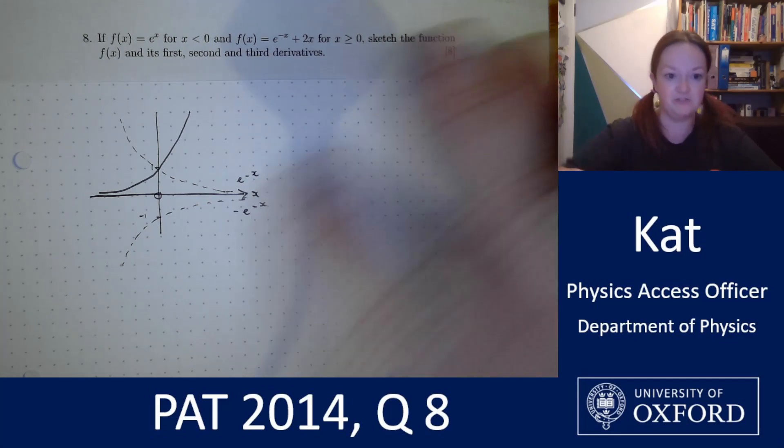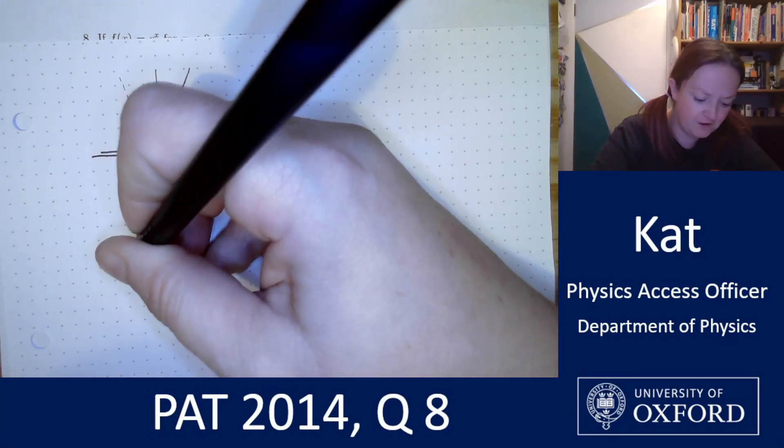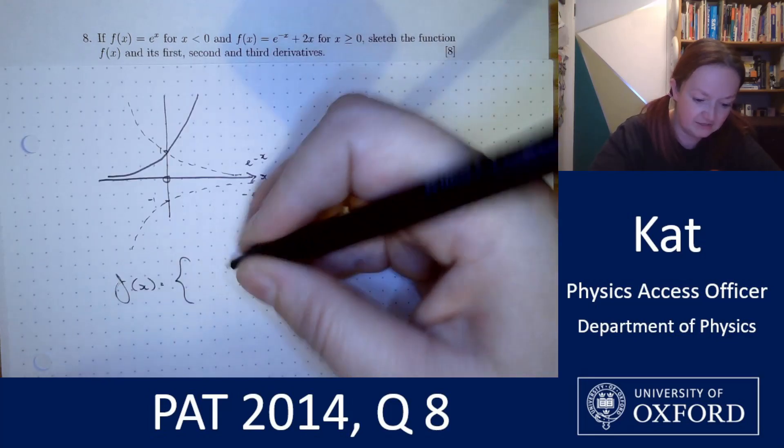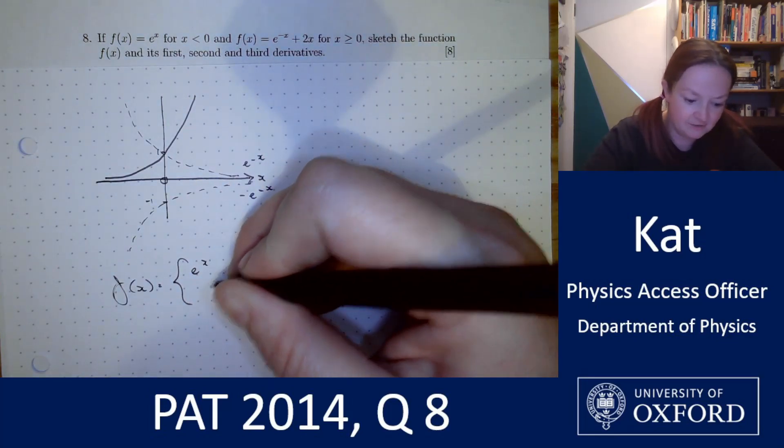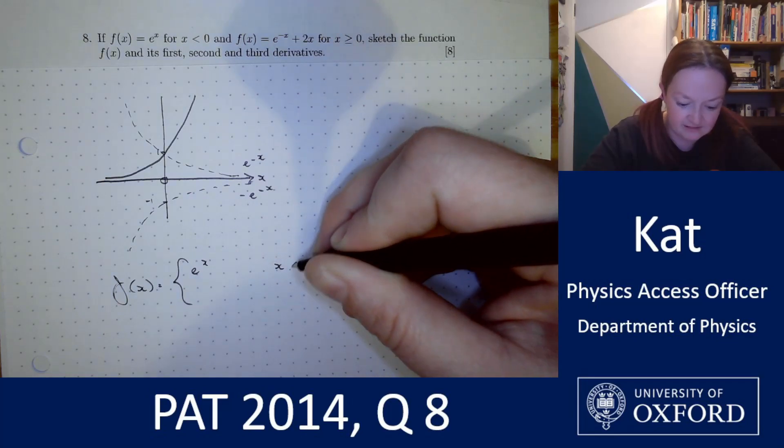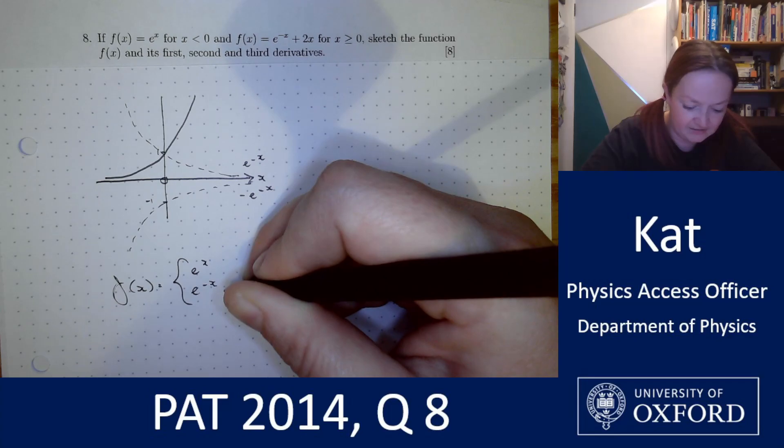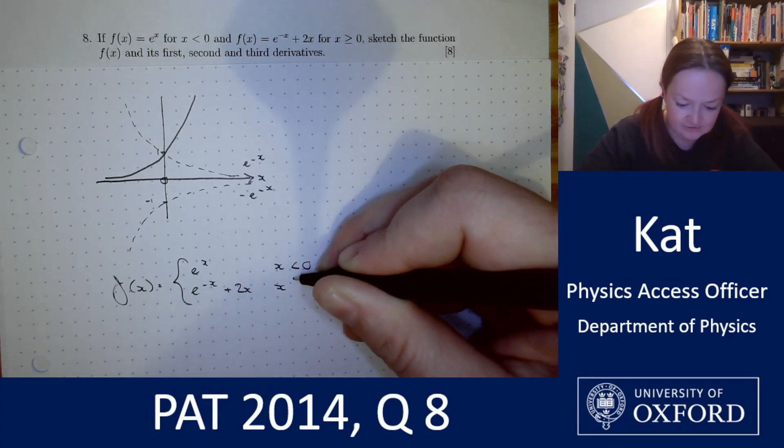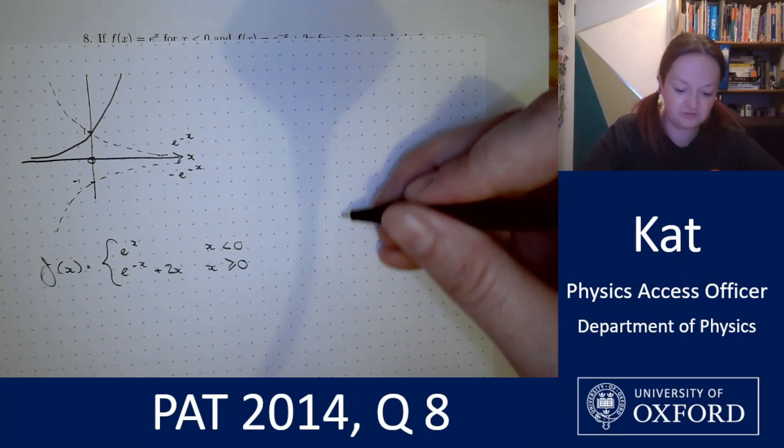So let's come back to our original question now that we've thought about those curves and our first curve f(x) we'll use our curly brackets set this up properly is e to the x for x is less than zero and e to the negative x plus 2x for x is greater than or equal to zero. Let's get this sketched.